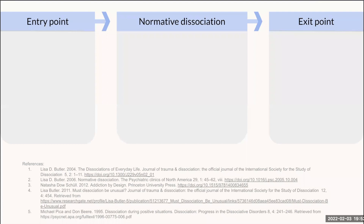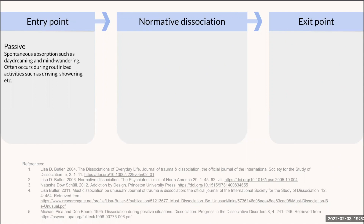This describes the normative dissociation process. There is typically some entry point, the actual experience of dissociation, and then an exit point. You can start dissociating in one of two ways. The first is passive dissociation, where you are spontaneously absorbed in daydreaming and mind wandering during some sort of routinized activity — this could be showering, driving, or washing the dishes. You can also have active dissociation, where people plan some sort of absorptive experience like watching a movie, playing a game, or reading.